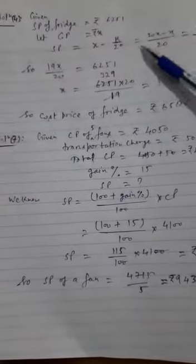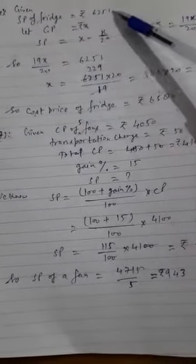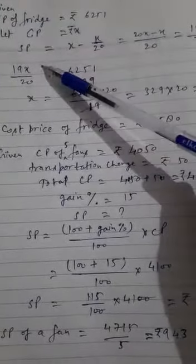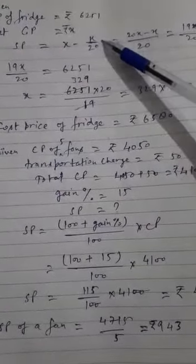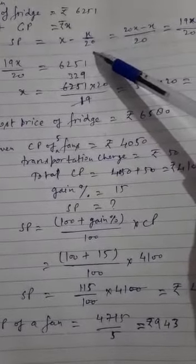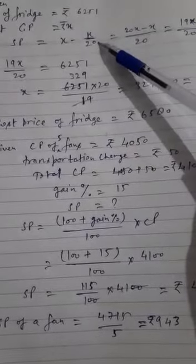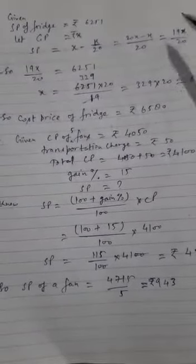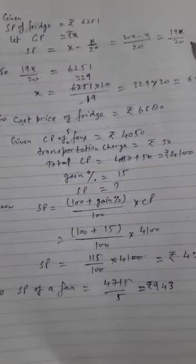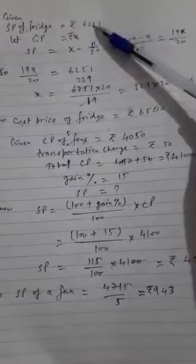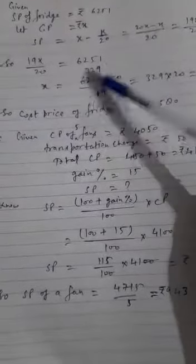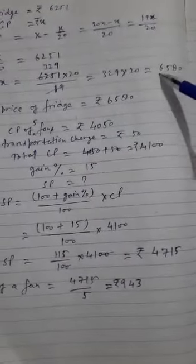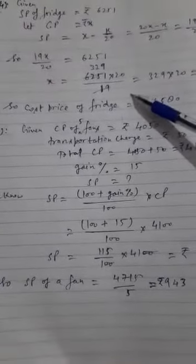Question number 4: SP of a fridge 6251 rupees. Let CP is x. SP is 19/20 of CP, which means 19x upon 20. SP dono mein kya hai? Same hai, dono equate kar lenge. After equating and solving for x, you will get 6580 rupees is the CP, cost price.